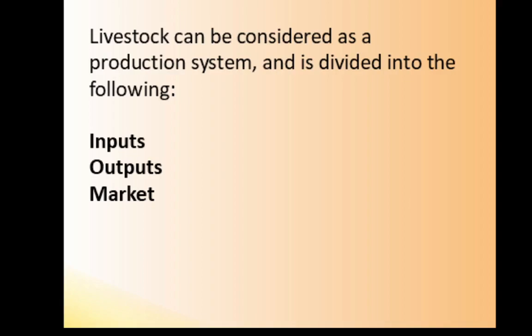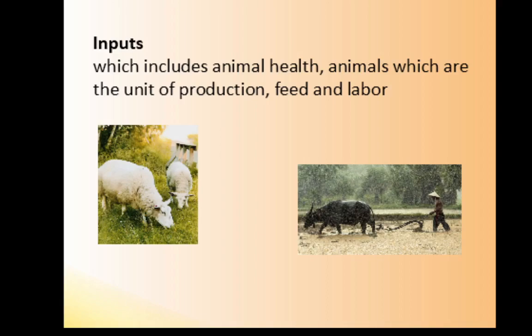Inputs include things that we provide for animal health, like vaccines and medicines. It also includes animals, which are the unit of production, as well as feed that we provide our animals, and labor.